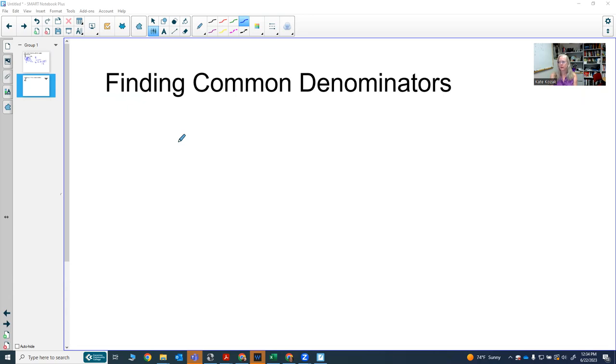The simplest way to find a common denominator is to multiply the two denominators together. Consider this example: let's say I have 5/6 and I want to add that to 3/4.